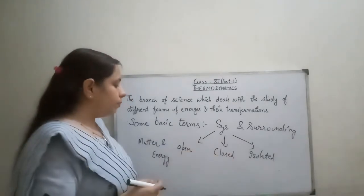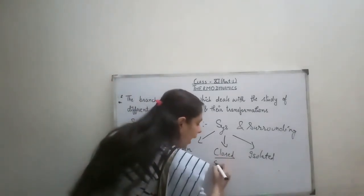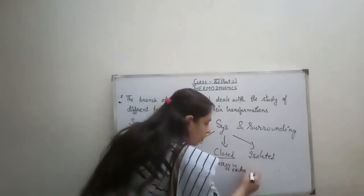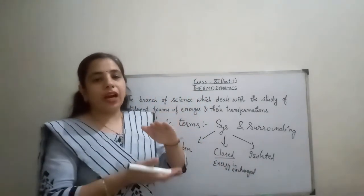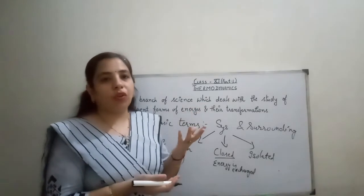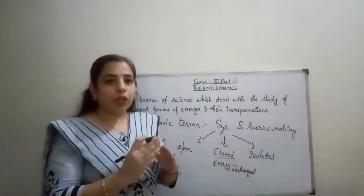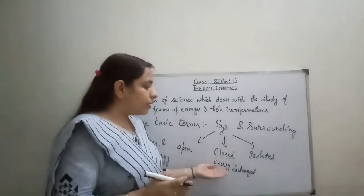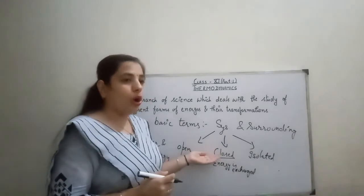In a closed system, there is exchange of energy only — not matter. For example, if we cover the hot cup of tea, water vapors will not go into the surrounding. But heat will still dissipate until the system and surrounding reach the same temperature. So in a closed system, only energy is exchanged, not matter.